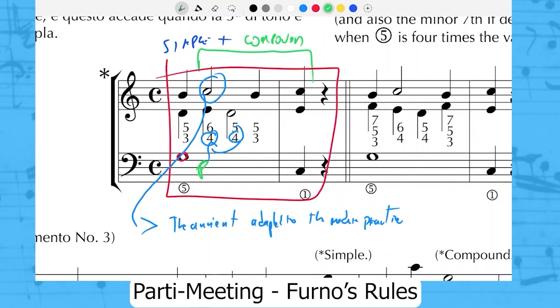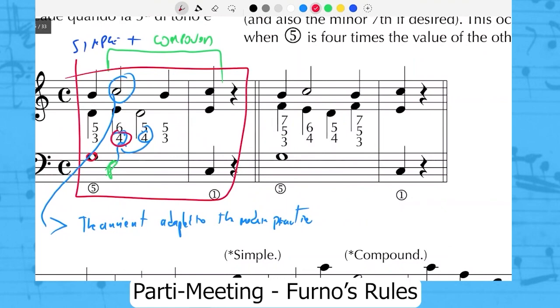When we have a suspension we have three phases that are preparation, suspension and resolution. The preparation is a consonance, the suspension is dissonance, and the resolution is a consonant that is a step lower. This preparation here is dissonance, the fourth. For that we have the bad syncopation. He says syncopa tutta cattiva, that is bad syncopation.